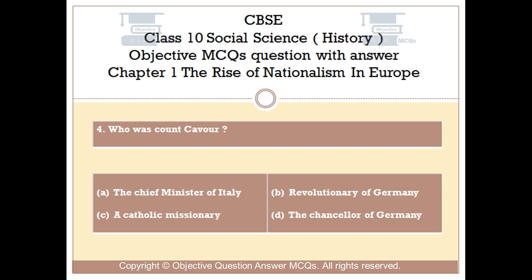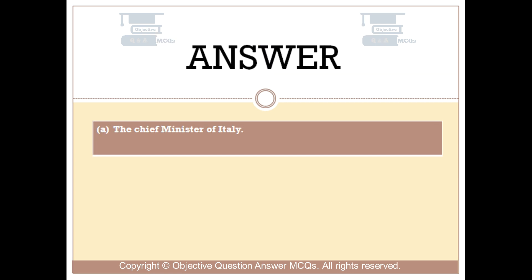Question number 4. Who was Count Cavour? Option A: the chief minister of Italy. Option B: revolutionary of Germany. Option C: a Catholic missionary. Option D: the chancellor of Germany. The right answer is Option A — the chief minister of Italy.